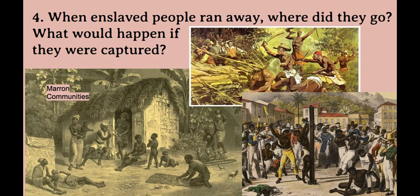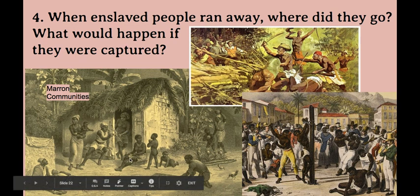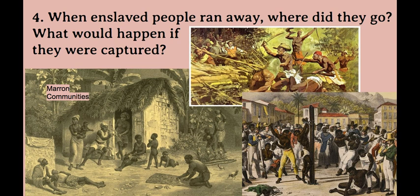Question number four: when enslaved people ran away, where did they go, and what would happen if they were captured? In the Caribbean, the West Indies, Brazil, and many places in the Americas, enslaved Africans ran away in large numbers. However, their families, villages, towns, and countries were across the ocean. So they created new communities, sometimes known as maroon communities — maroon as in marooned or abandoned, not as in the color. These were communities of people who had abandoned their life as enslaved people, located out in the forest, up in the mountains, in the hills, in any place remote from the plantations.